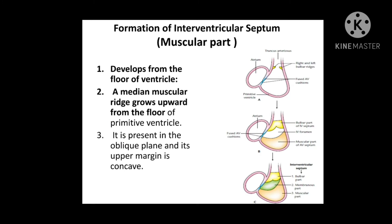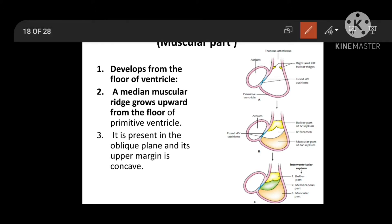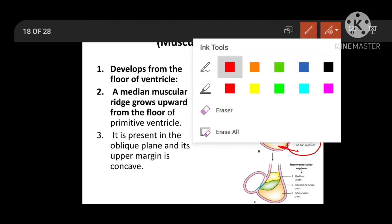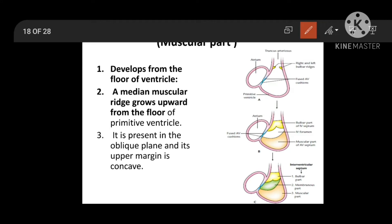The muscular part develops from the floor of the bulboventricular cavity. It is a median muscular growth which is growing upward from the floor of the primitive ventricle, and its upper margin is concave. It is also present in the oblique plane.